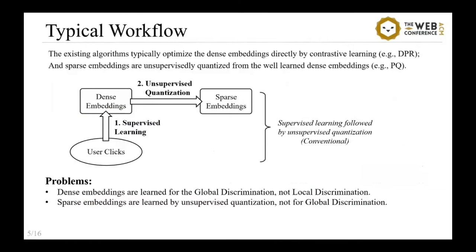The existing algorithms typically learn the dense embeddings directly. When sparse embeddings are needed, they are usually generated by unsupervised quantization from the learned dense embeddings. However, we argue that the conventional way of generating bi-granular document representation is improperly optimized. In particular, the conventional dense embeddings are learned for global discrimination. However, considering that the dense embeddings are used for post-verification, they shouldn't be optimized over the entire corpus answer distribution. Besides, it is worth noting that unsupervised compression does not guarantee full coverage of relevant answers in candidate search.